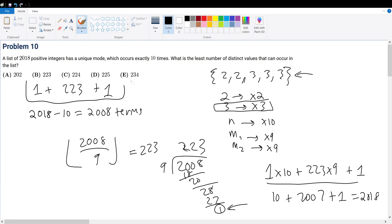So, that means this expression right here has all 2018 terms accounted for because this verified it. Therefore, we have a total of 225 terms, so your final answer will be answer choice D.